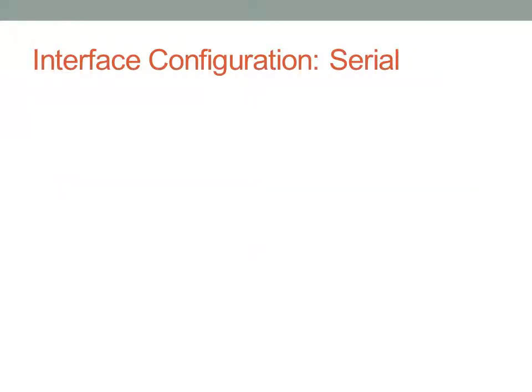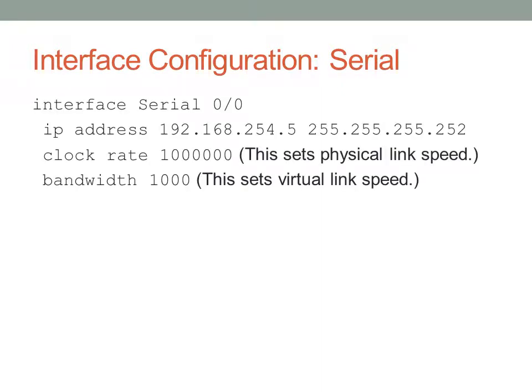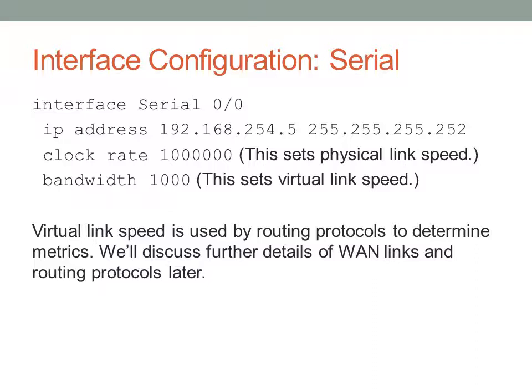For serial interfaces, we'll talk more about these when we get to WAN connectivity. Serial interfaces are typically additionally configured with a clock rate, depending on the interface type. The clock rate establishes the physical link speed. You may also want to configure a bandwidth on that interface, which is used by routing protocols. We'll talk more about how routing protocols use this bandwidth as we discuss the individual protocols. We'll discuss more about serial links when we get to WAN links.